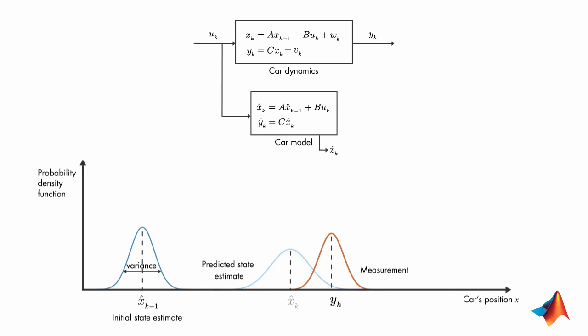Now that we have the prediction and measurement, the question is what is the best estimate of the car's position? It turns out that the optimal way to estimate the car's position is by combining these two pieces of information. And this is done by multiplying these two probability functions together. The resulting product is also a Gaussian function. This estimate has a smaller variance than either of the previous estimates. And the mean of this probability-dense function gives us the optimal estimate of the car's position. This is the basic idea behind Kalman filters.